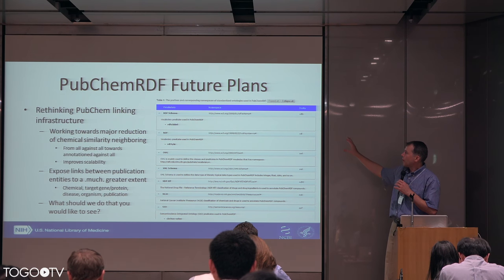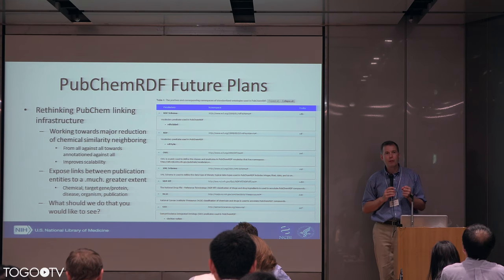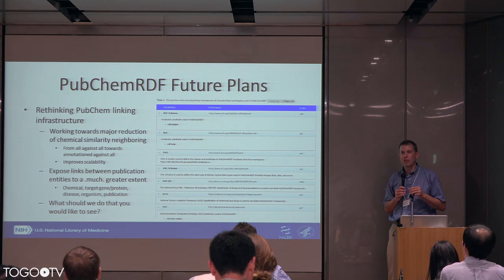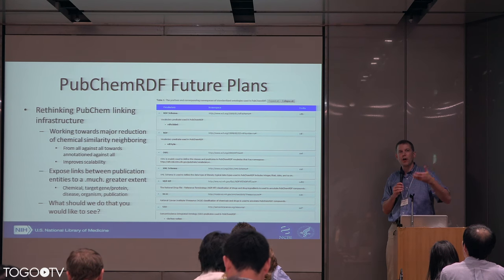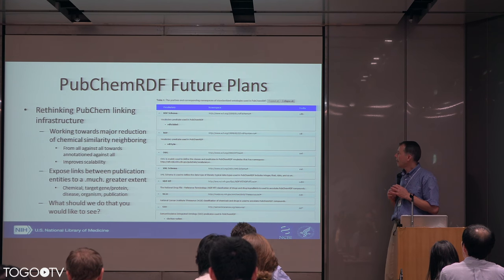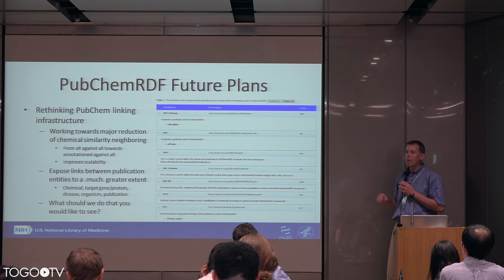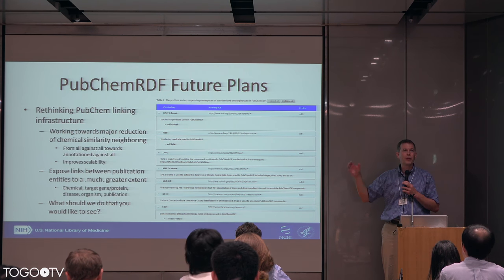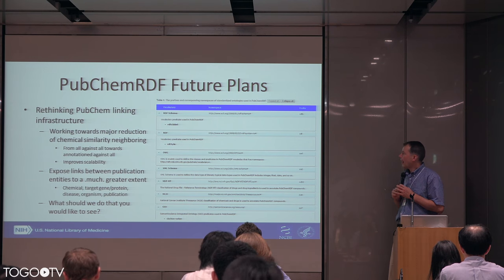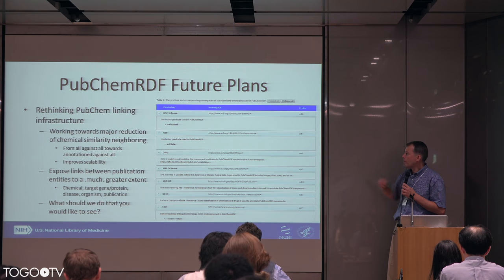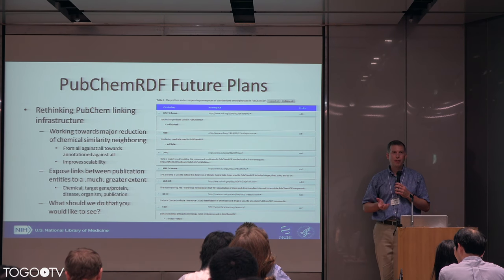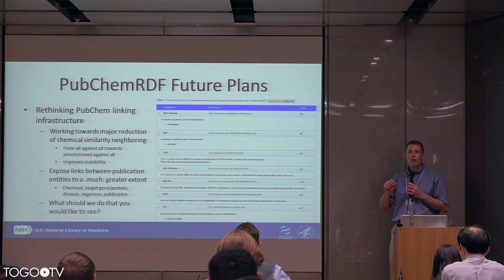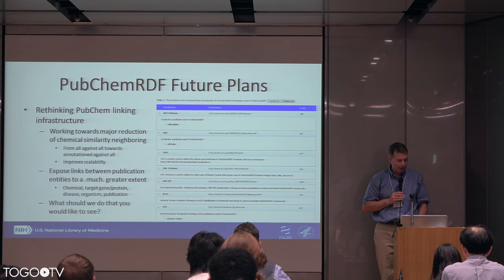We have a number of plans for RDF, although we've been on a development pause. We paused because we don't have space to add more triples — we could continue to provide many additional hundreds of billions of links. We're working towards reducing the number of chemical similarity links between entities, which makes up several tens of billions of entities. We're also looking to provide more links between publication trails of entities — for example, a link between a chemical and a gene, and any publications that back that up or near-neighborhood information.